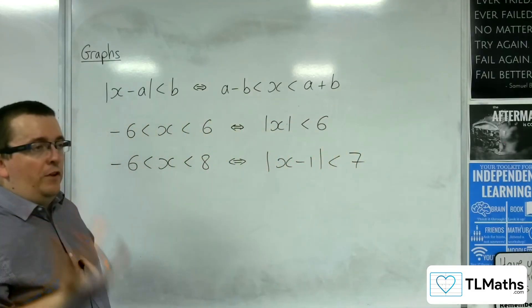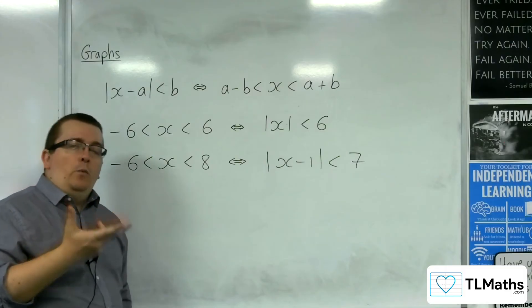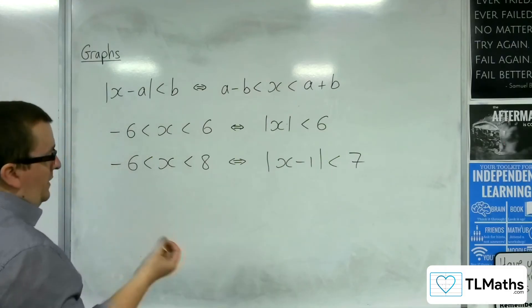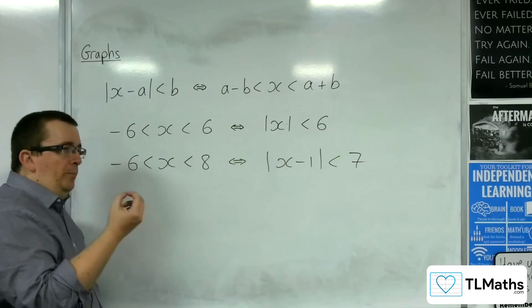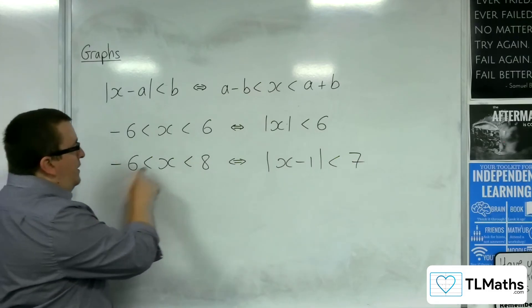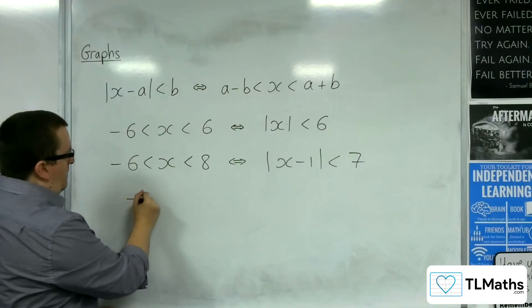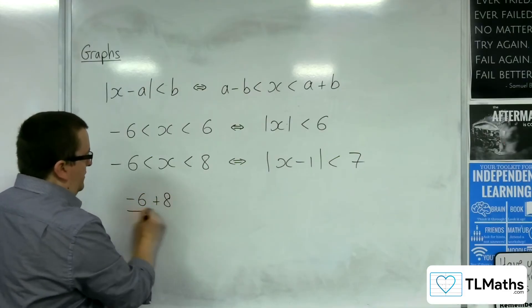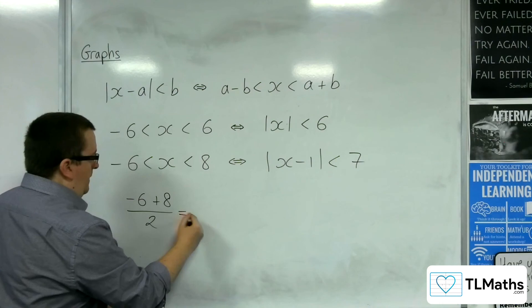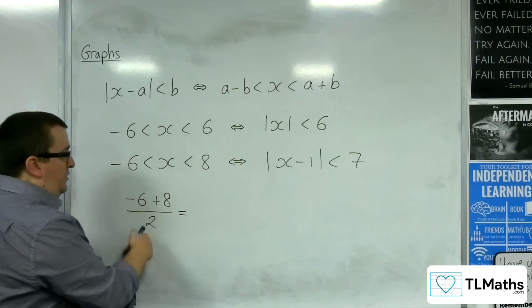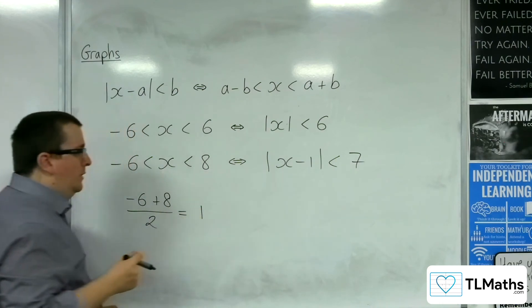So how did I go about it? Well, once I'd drawn the graph, I needed to find out where the vertex was. Now, the vertex was based on the average of these two x-coordinates. So I could work out minus 6 plus 8 divided by 2. Minus 6 plus 8 is 2, divided by 2 is 1.